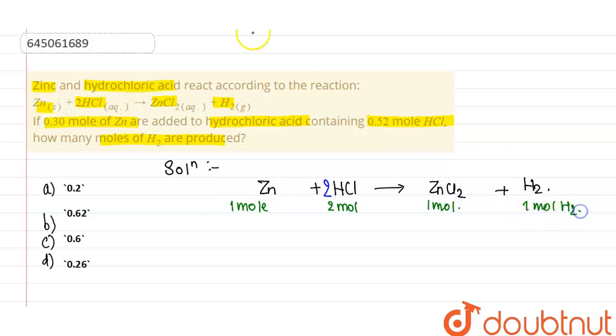In the question, 0.30 moles of zinc and 0.52 moles of HCl are provided. We've been asked how many moles of hydrogen are produced in the reaction according to this equation.